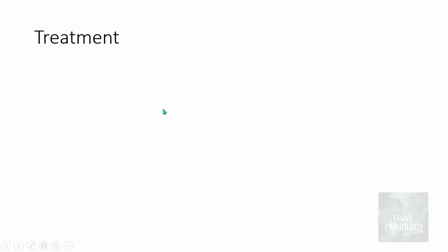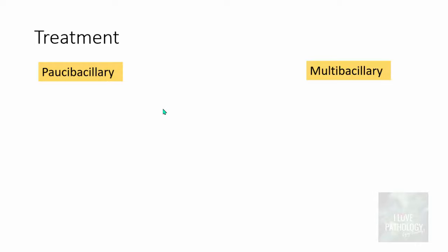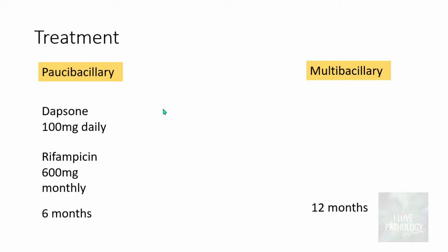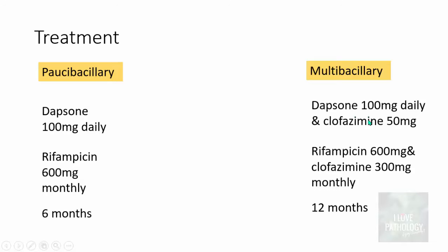Treatment depends on whether the case is paucibacillary or multibacillary. Paucibacillary leprosy is treated for 6 months with Dapsone 100 mg daily and Rifampicin 600 mg once monthly for 6 months. Multibacillary leprosy is treated for 12 months with Dapsone 100 mg daily and Rifampicin 600 mg monthly, plus Clofazimine 50 mg daily for 1 year and Clofazimine 300 mg every month for 1 year.